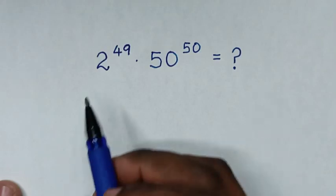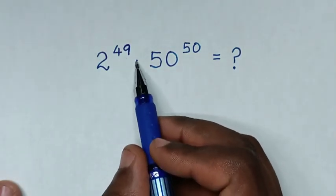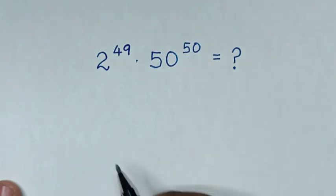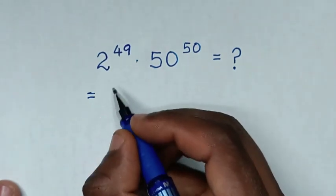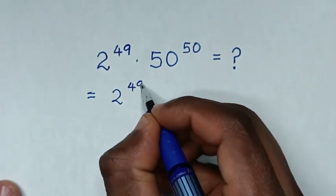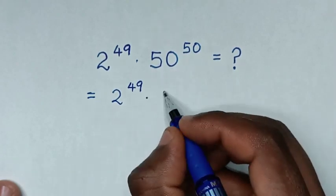Hello, how to solve 2 power of 49 times 50 power of 50. So it will be equal to this 2 power of 49 then times 50.